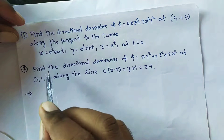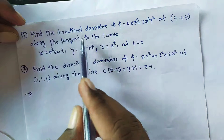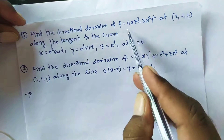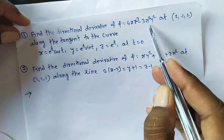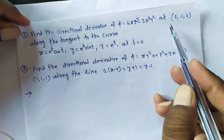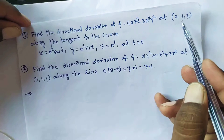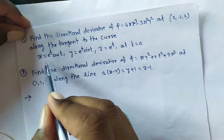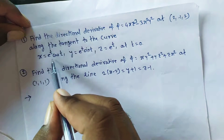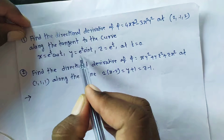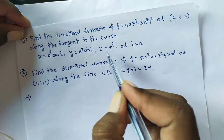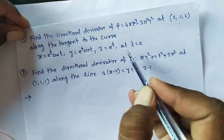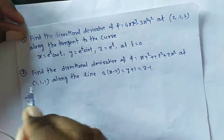Our today's first problem is: find the directional derivative of φ = 4xz³ − 3x²y² at the point (2, −1, 2), along the tangent to the curve x = eᵗ cos t, y = eᵗ sin t, z = eᵗ at t = 0.